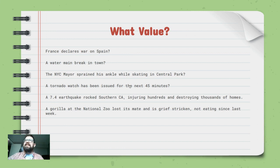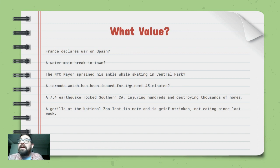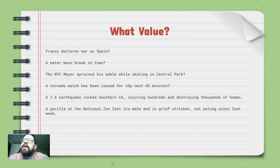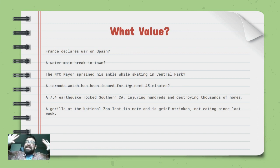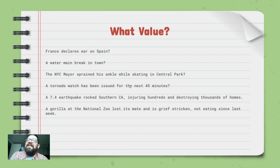News stories don't have to fit just one news value — they should fit more than one. A water main break has impact and proximity: you need to boil your water, know which roads are closed. The NYC mayor spraining his ankle while skating in Central Park — the content calls it prominence since he's a famous person. A tornado watch issued for the next 45 minutes has impact, recentness, and proximity.